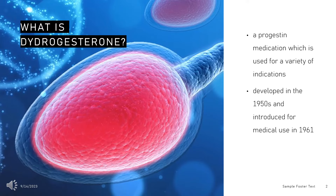Dydrogesterone, sold under the brand name Duphaston among others, is a progestin medication used for a variety of indications, including threatened or recurrent miscarriage during pregnancy, dysfunctional bleeding, infertility due to luteal insufficiency, dysmenorrhea, endometriosis, secondary amenorrhea, irregular cycles, premenstrual syndrome, and as a component of menopausal hormone therapy.